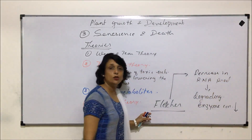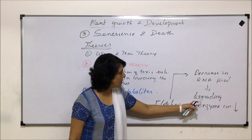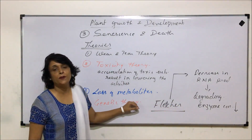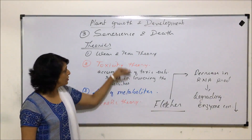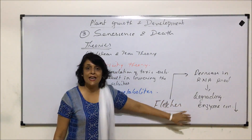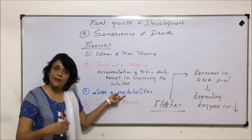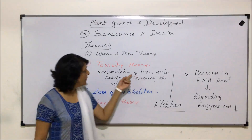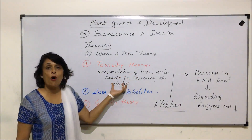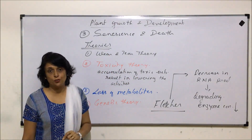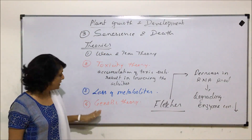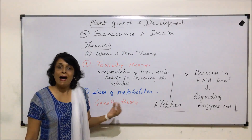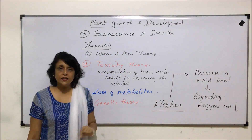Decreased RNA production results in lowering of enzyme concentration, especially the degrading enzymes. The genetic theory can also explain the other three theories: if degrading enzymes are fewer, metabolites may get lost, toxic substances that would otherwise be degraded by these enzymes would accumulate, and because of all these things there would be wear and tear of the plant tissues. That is why most scientists favor this theory, though separately each theory is also considered significant in the process of senescence and ultimately death.